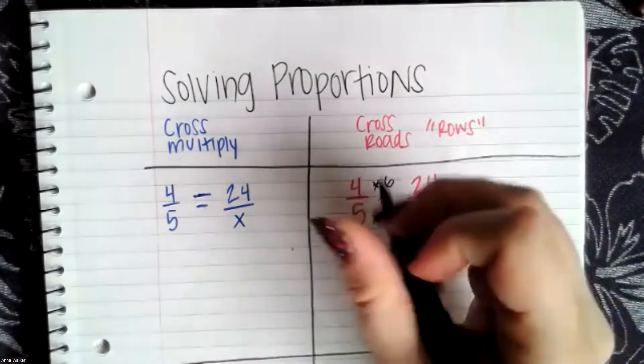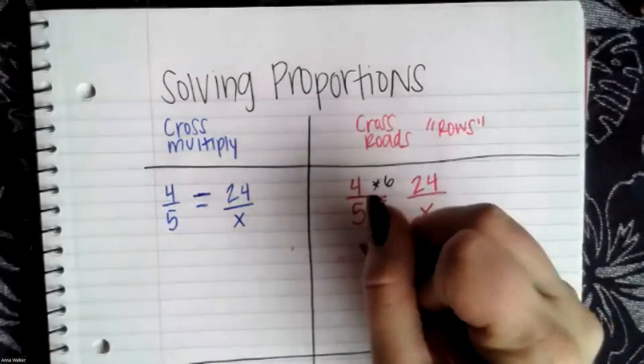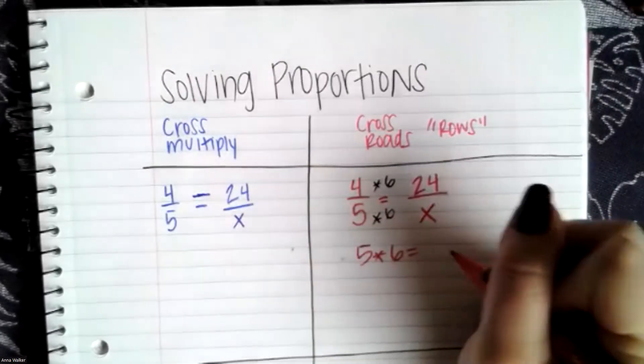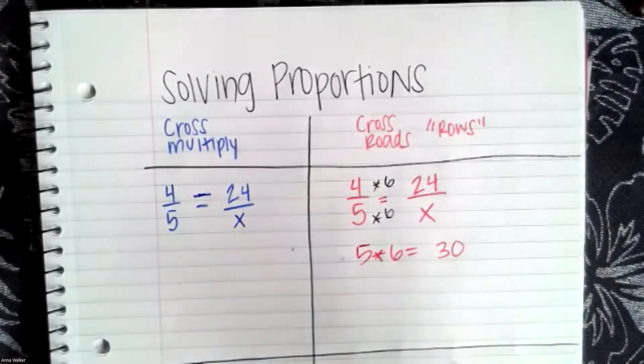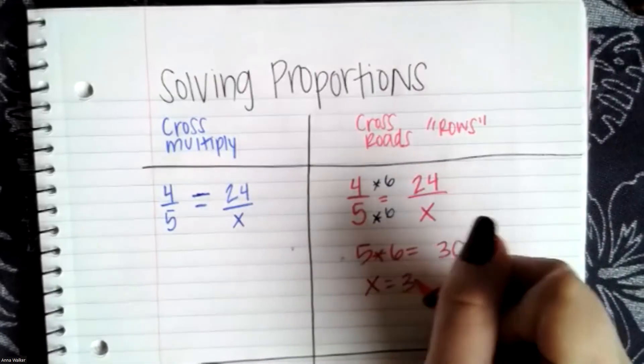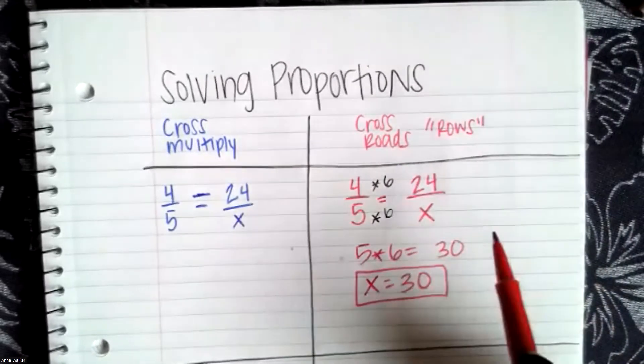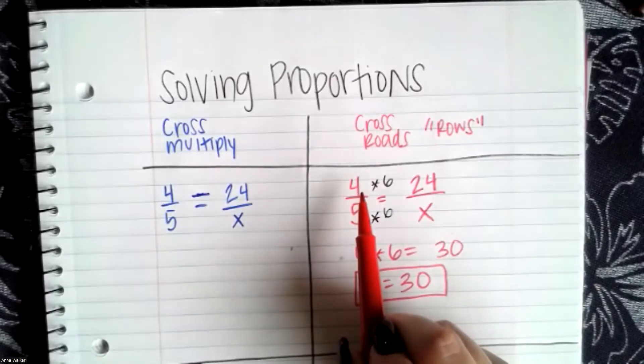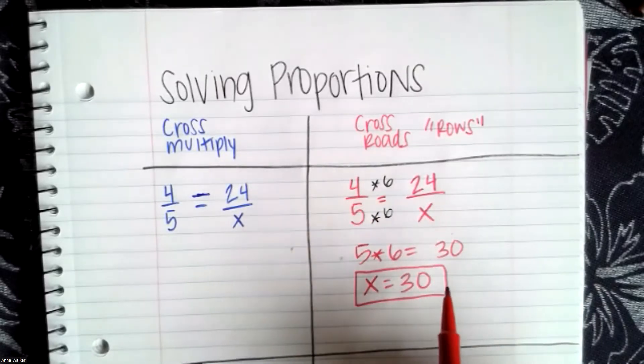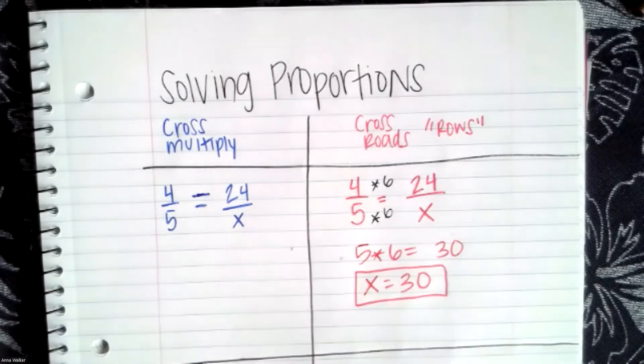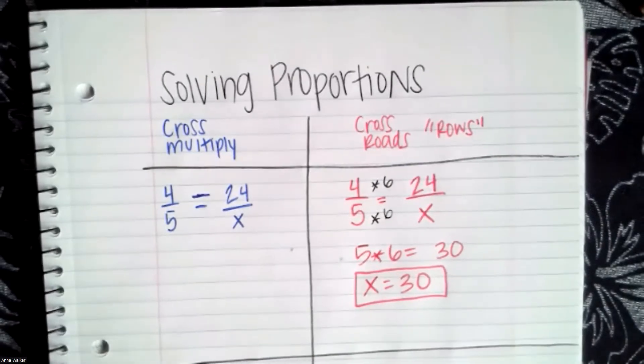Similarly to if this was a fraction, I want to make sure that the denominator increases at the same rate. So if I want to make sure this proportion is proportional to four fifths, I'm going to increase five by six. So five times six equals 30, which means that X is equal to 30. If there's four cats for every five dogs and there's 24 cats, that means there's 30 dogs if we keep that proportion the same.